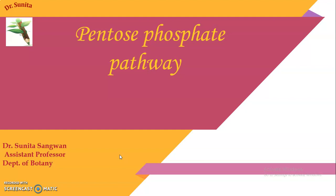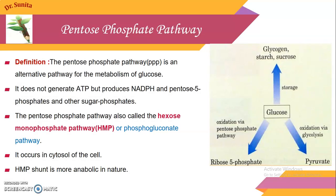Hello everyone. In the last lecture we covered the topic oxidative phosphorylation, and with that our cellular respiration phase is completed. But there is one more cycle — the pentose phosphate pathway. It is an alternate to the glycolysis pathway, so glucose metabolism has several pathways.